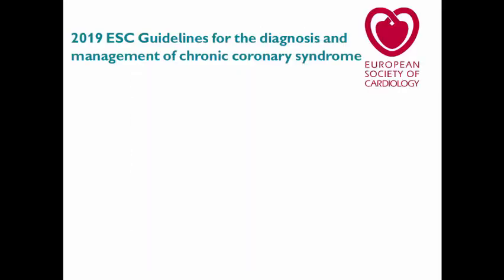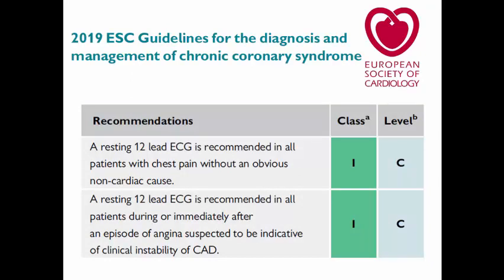In the 2019 ESC guidelines for chronic coronary syndrome, there is a Class I recommendation for a resting 12-lead ECG in all patients with chest pain without an obvious non-cardiac cause, recommended during or immediately after an episode of angina suspected to be indicative of coronary artery disease. In general, in any patient with chest pain, a resting ECG is the first step, followed by imaging. Based on ECG and echo results, I decide whether to proceed with stress imaging, CT coronaries, or go directly to invasive coronary angiography and revascularization.